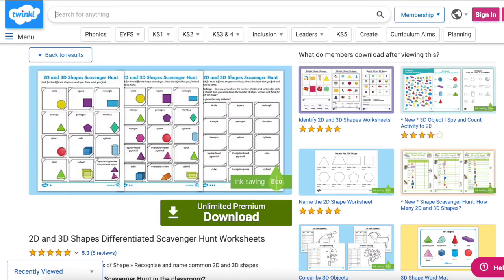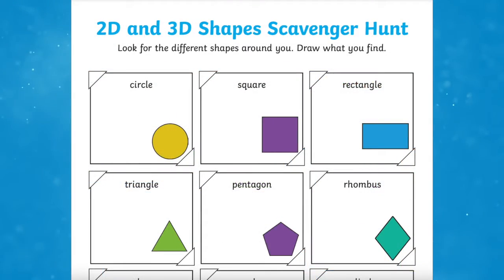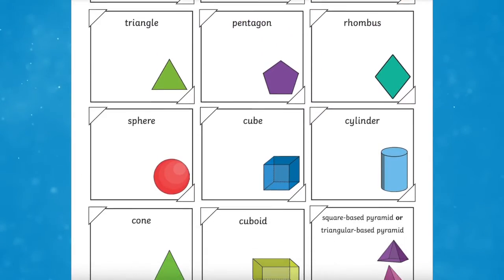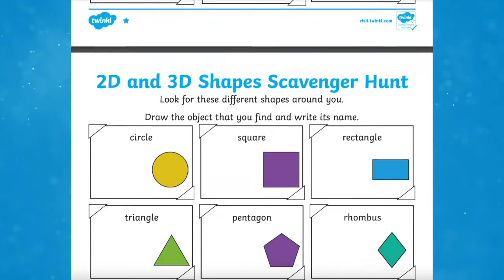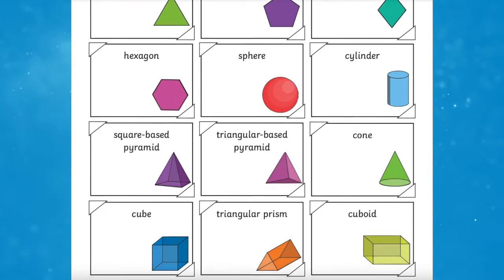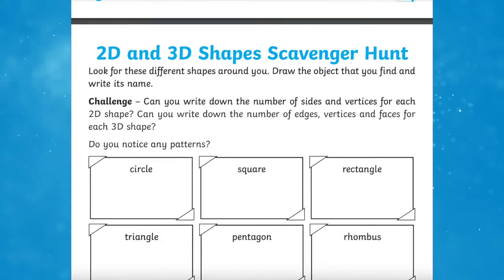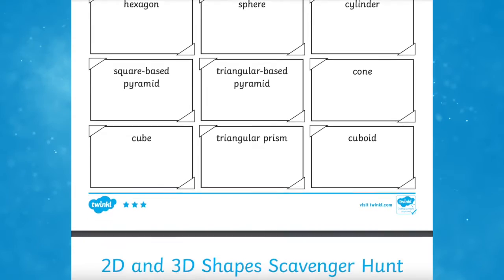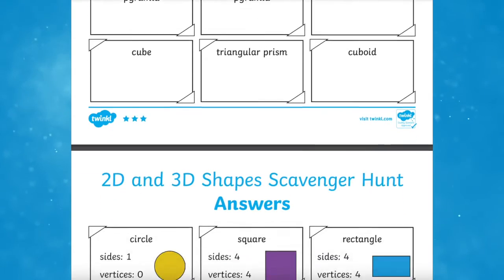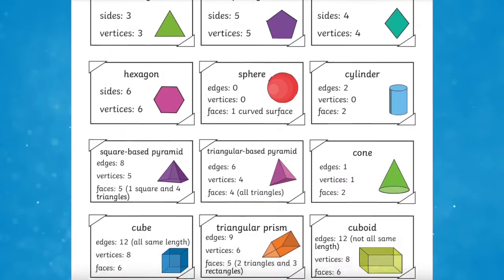And then finally, this 2D and 3D shape differentiated scavenger hunt worksheet might just be the great way to end the lesson or even to hand out for a fun home learning task. Children are tasked to find a real life object that matches the shape on the scavenger hunt, a fun way to help embed what they know about both 2D and 3D shapes.